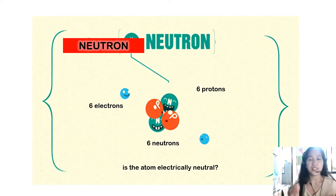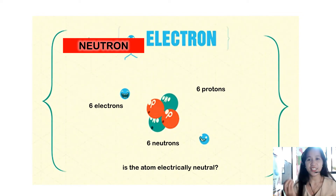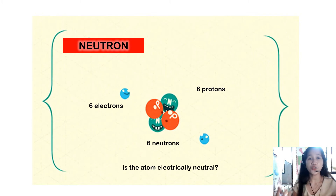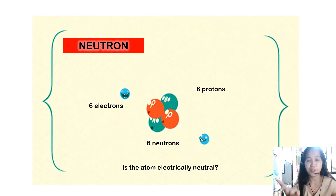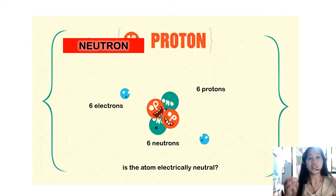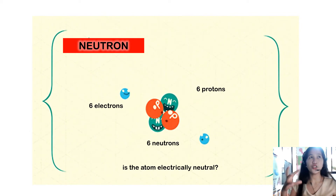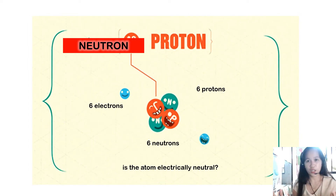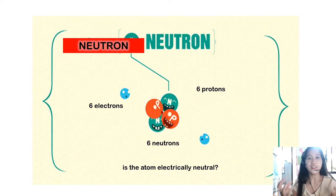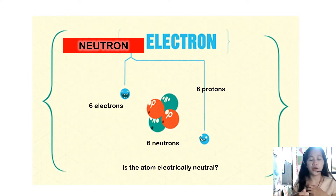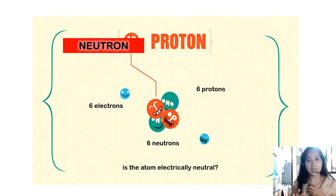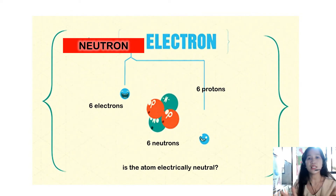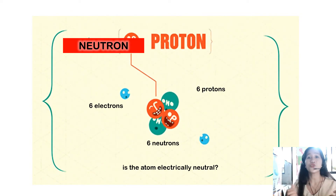The other particle in atoms is the neutron, which does not carry any charge — it is neutral. As you may have guessed from its name, neutron means neutral. It does not carry any charge at all. Consider an atom that has 6 protons, 6 electrons, and 6 neutrons.